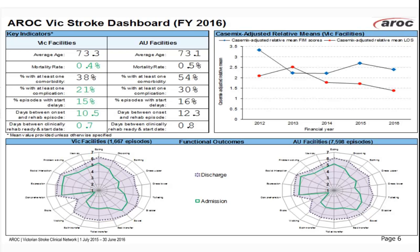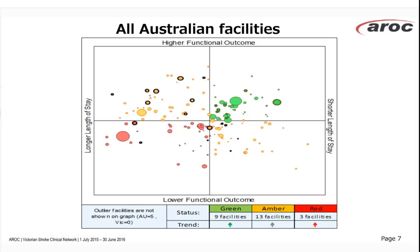The graphics at the bottom are FIM splats — radar charts with the 18 items comprising FIM around the outside, scored from one to seven up the spokes. The green line shows FIM scores by item on admission to rehab, and the dotted purple line shows FIM scores on discharge — a visualisation of functional change achieved during rehabilitation. A blow-up of the first graphic shows many Victorian circles in the quadrant achieving higher functional outcome but taking a longer length of stay.